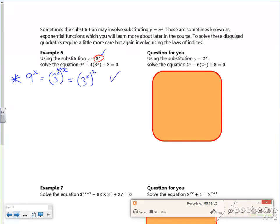And that's how I want the quadratic term. I've got my something squared. So the formula becomes instead of 9 to the x, I've got 3 to the power x all squared minus 4 lots of 3 to the x, plus 3 is 0.